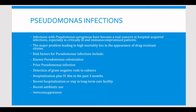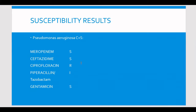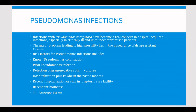Pseudomonas infections have become a real concern in hospital-acquired infections. This is a very popular bug in hospitals, especially in the ICU and in immunocompromised patients. The major problem leading to high mortality is drug resistance — especially with newly emergent multi-drug resistant pseudomonas, where the susceptibility results show resistance across the board, with no antibiotic able to kill it.